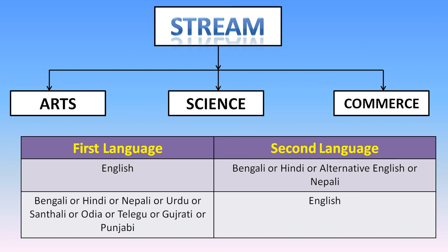For the first language in Bengal, options include Bengali, Hindi, Nepali, Urdu, Uriya, Telugu, Gujarati, and Punjabi — among many other languages. The second language is typically English.